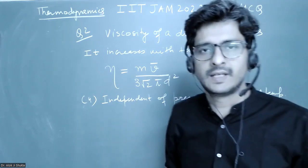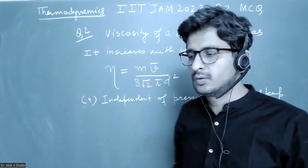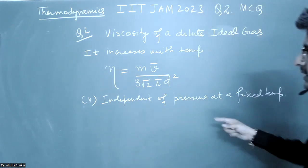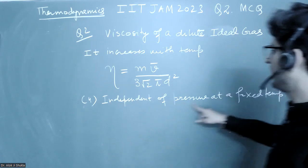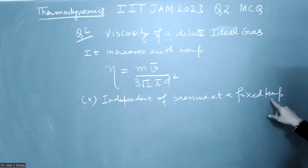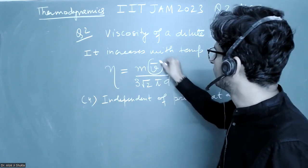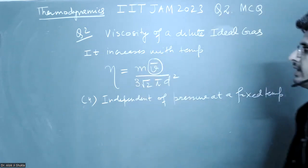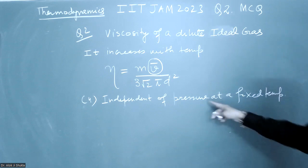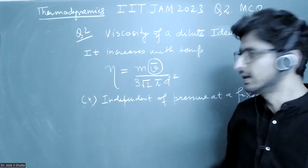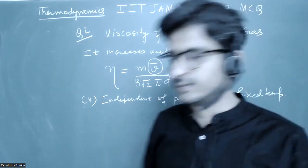There were four options. We know that viscosity increases with increase in temperature. The option says it is independent of pressure at a fixed temperature. So as you fix the temperature, this quantity will be fixed, and once fixed, it will be independent of the pressure. So option 4 will be correct.